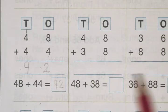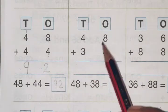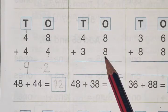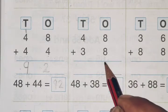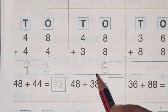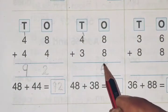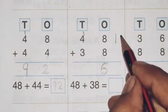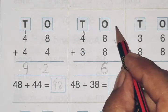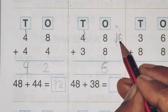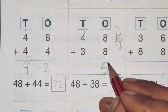Now next question: 48 plus 38. 8 plus 8 is 16, so 16. The number in the ones place stays here, and the tens place number carries.